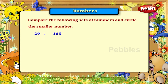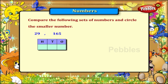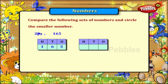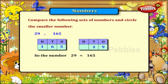29 and 165. The number 165 has 3 digits and the number 29 has only 2 digits. So which number is smaller? The number 29 is smaller than 165. Circle the number 29.